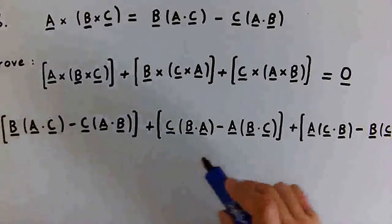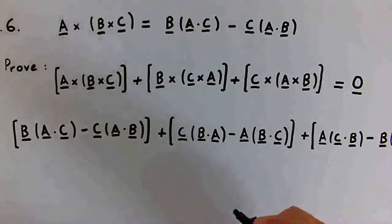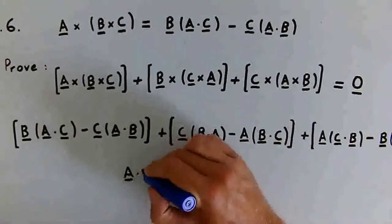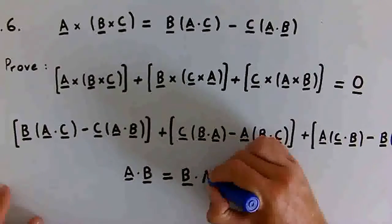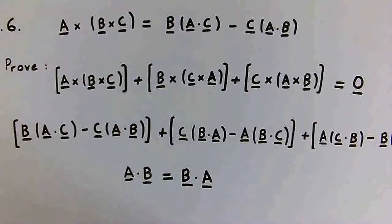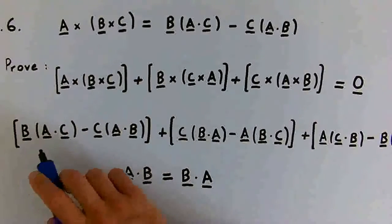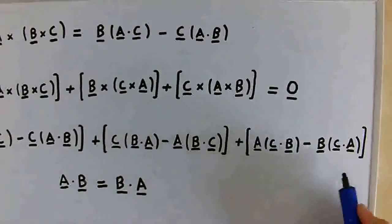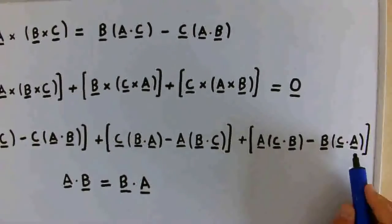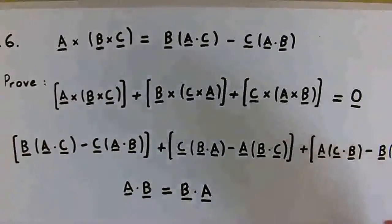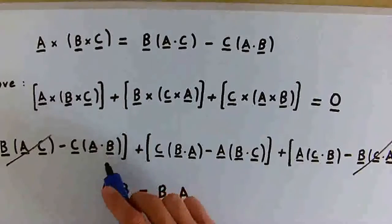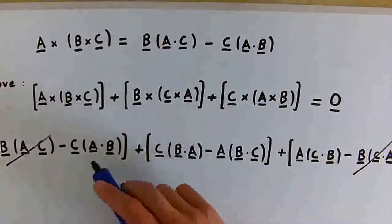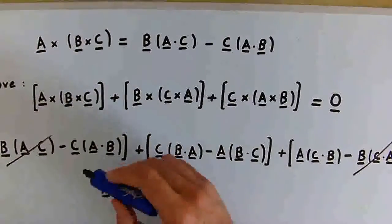Now we just need to check that this full expression is equal to zero. This is quite straightforward if we just remember that A dot B for any two vectors is the same as B dot A. Taking this into account, we can see if any terms cancel. We've got a plus B times (A dot C) here, and a minus B times (C dot A) there. Since C dot A equals A dot C, these two terms cancel out — the first and the last terms cancel.